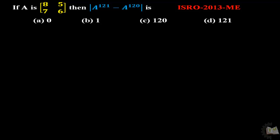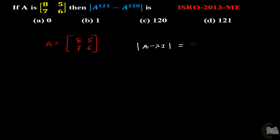We approach this question based on the concept of eigenvalues. First, we have to calculate the eigenvalue of matrix A. We know how to calculate it using the characteristic equation: determinant of (A minus lambda I) equal to 0. Writing out the matrix, it will be (8 minus lambda)(6 minus lambda) determinant equal to 0.